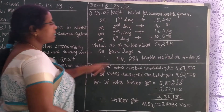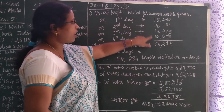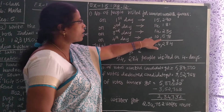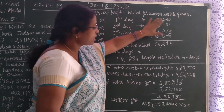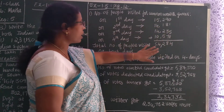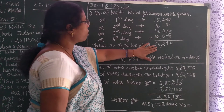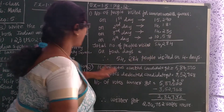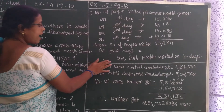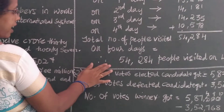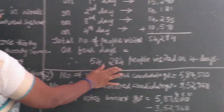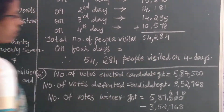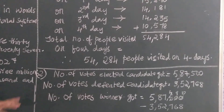And this addition — since this is online, you know how to add. Sixth class children, you know. I have added and written the answer here. Last statement: 54,284 people visited on four days. Now second problem, see children.